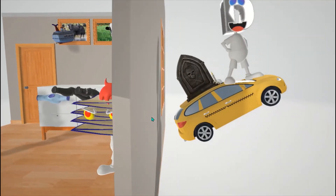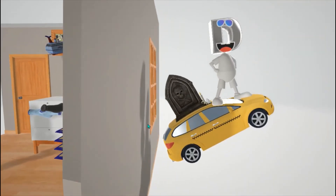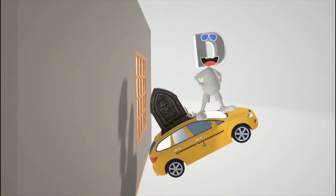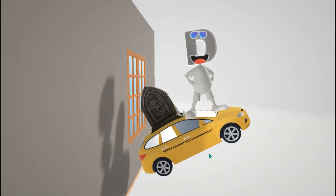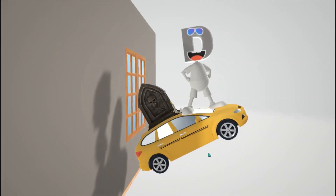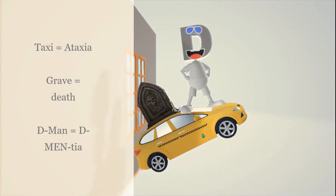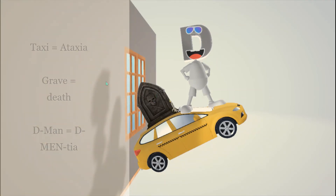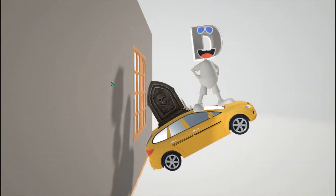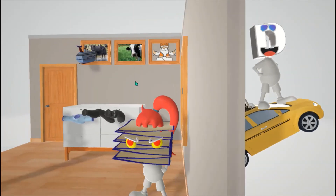He already got away, but he's going to help us remember some symptoms associated with prion diseases. The ataxia character is going to help us remember ataxia. The grave over here is going to help us remember death. Before that of course is the D-man for dementia. Those are some key symptoms.